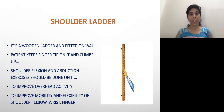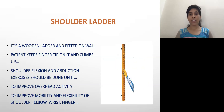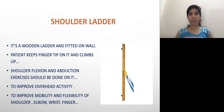It is called a shoulder ladder. It is fitted on the wall. With the help of the fingertips, the patient gradually climbs the ladder upward, performing shoulder flexion and shoulder abduction exercises. Overall, it helps to improve overhead activities and the mobility of various joints like the shoulder, elbow, wrist, and fingers.